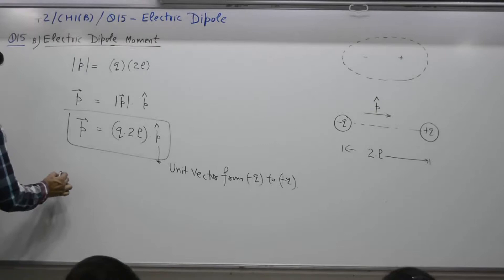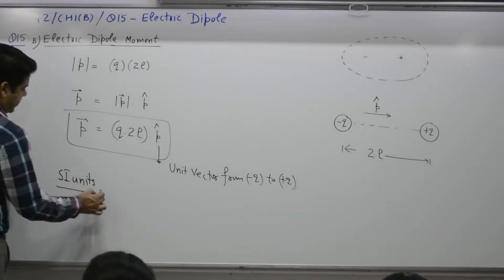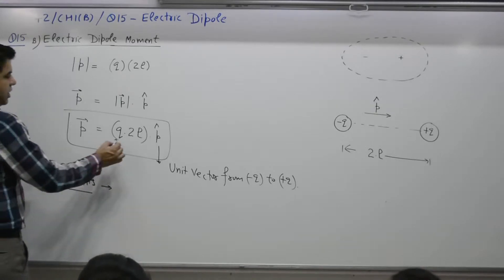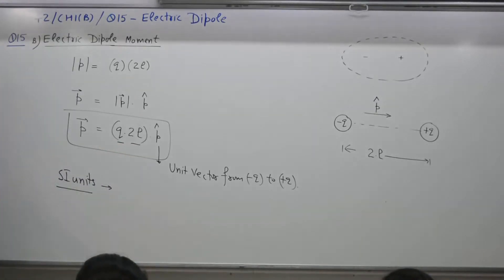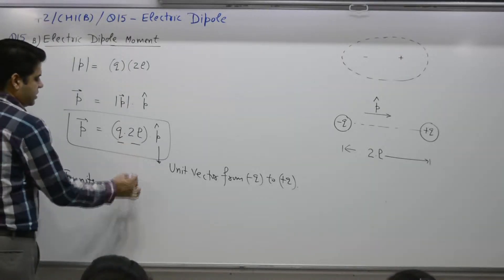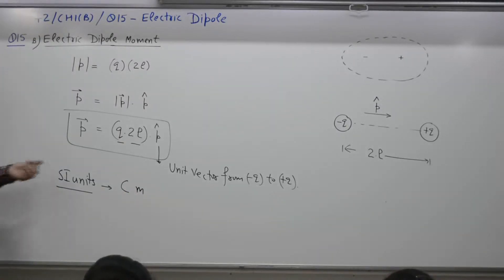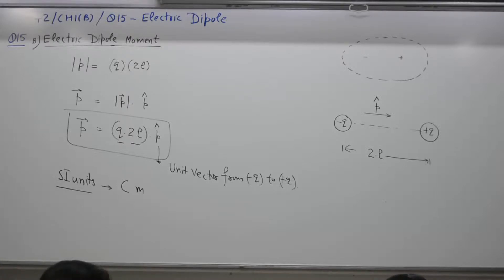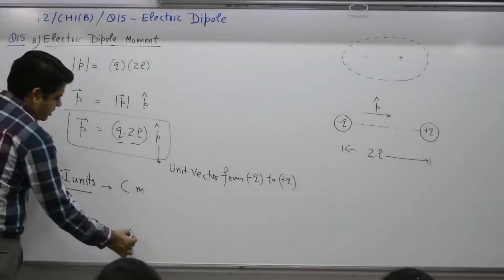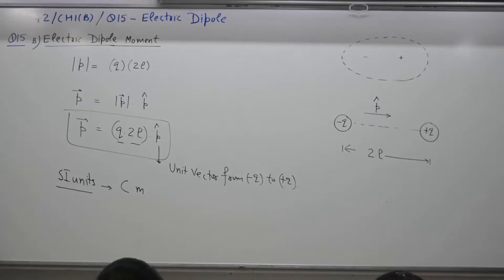What are the SI units of electric dipole moment? Charge times distance — SI unit for charge is coulomb, for distance is meter. So the unit is coulomb-meter. Note that coulomb must be written with a capital C, otherwise it appears to be centimeter.